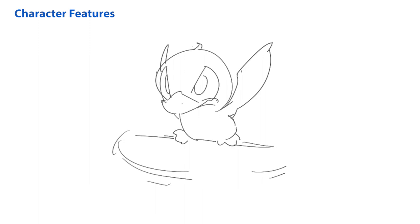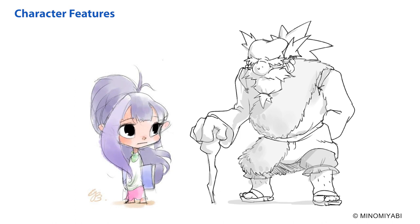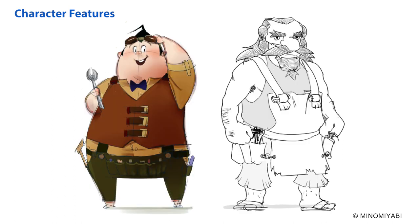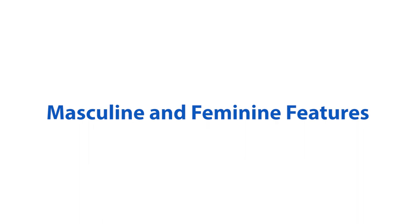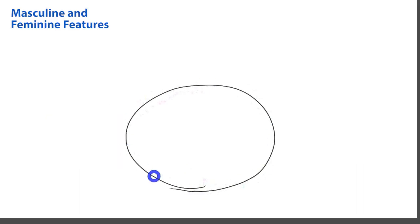I'm going to talk about character features in simple breakdowns: male or female, young or old, and chubby or muscular. We get a lot of information about people from their distinctive features. Since we know how to change the simple smiley face, let's start from that.